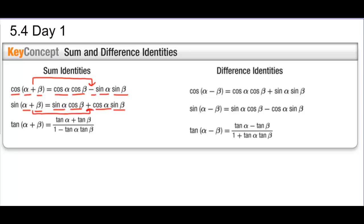With tangent, tangent of alpha plus beta equals tangent alpha plus tangent beta over 1 minus tangent alpha times tangent beta. Notice the sign is the same on top, and then the sign is the opposite on the bottom.